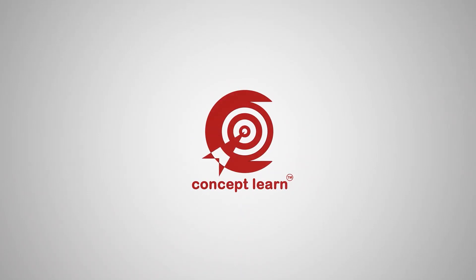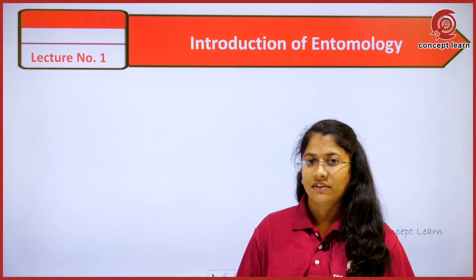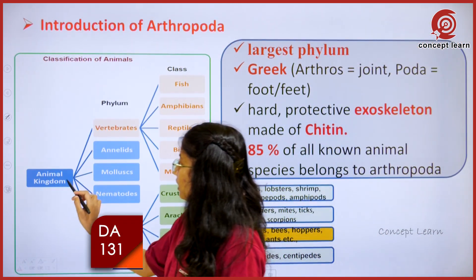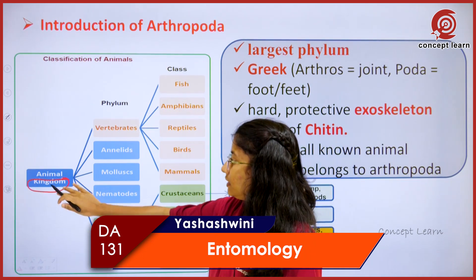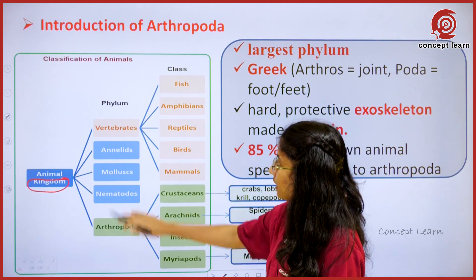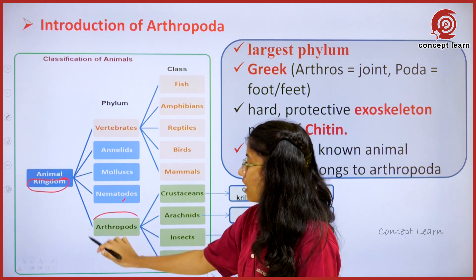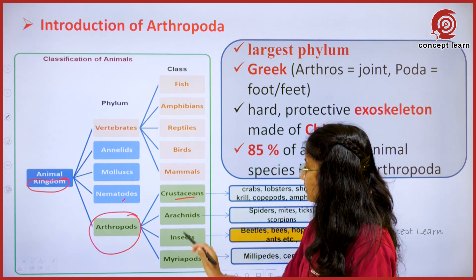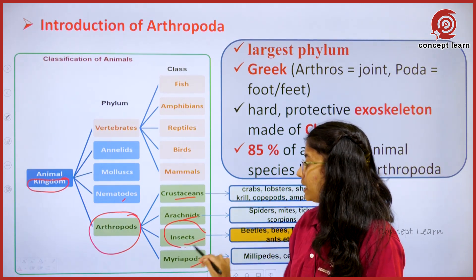Welcome to Concept Learn. This is Yeshyaswini. Coming to the introduction of Arthropoda: the highest taxon is the Kingdom, which includes animals. Under Kingdom Animalia there are several phylums like the vertebrates, annelids, mollusks, nematodes, and the arthropods. Under arthropods we can see several classes like the crustaceans, arachnids, insects, and the myriapods.